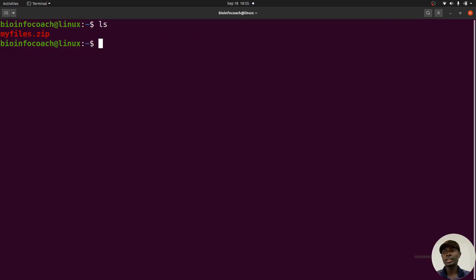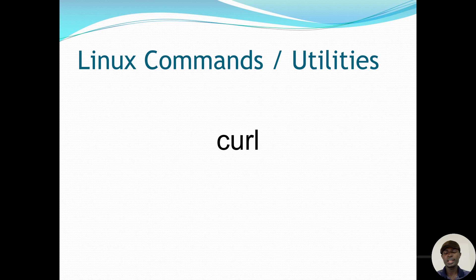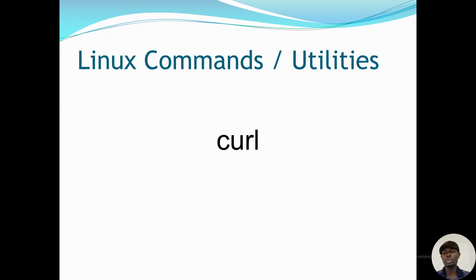The next command we'll look at is curl. Curl is also a utility used to download files from the internet. It works almost the same as wget. On Linux platforms, chances are you have wget installed; on macOS, you have curl already installed. I'm showing you both utilities so you know which one to use to download your files.